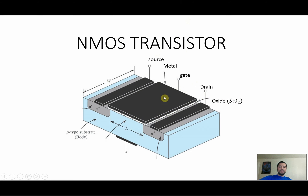This is to prevent electrons from going through the P-type substrate, which is the body right here. This is going to be heavily doped with positive charges. This is going to be the source region right here, heavily doped with negative charges. We're going to have a channel region where all the electrons accumulate. We have bulk right here, and a drain region which is also heavily doped with negative charges.